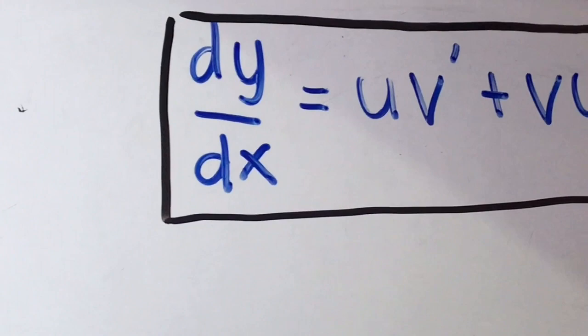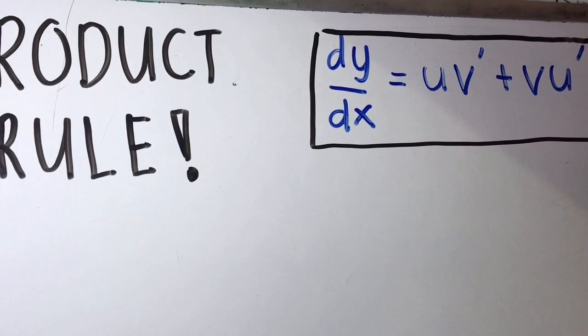We will learn about the product rule. The formula for the product rule is dy/dx equals uv' plus vu'. Today we're going to find dy/dx.